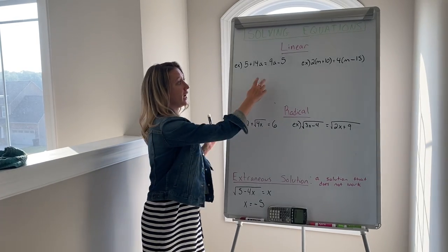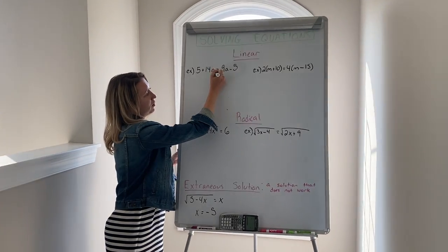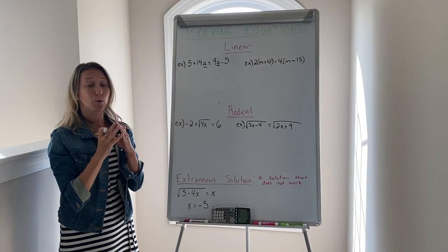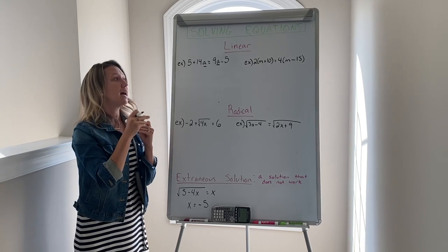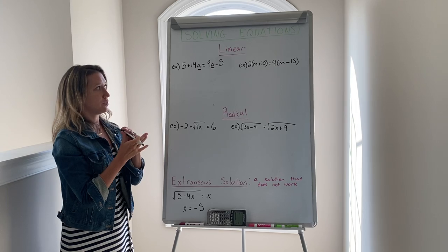We want to isolate the variable, which is a here, which means we want to get it by itself. If you have multiple variables on different sides, you always want to combine your other terms. We're going to put all the constants on one side and all the variables on the other. It doesn't matter which side you do this to as long as you do it correctly.